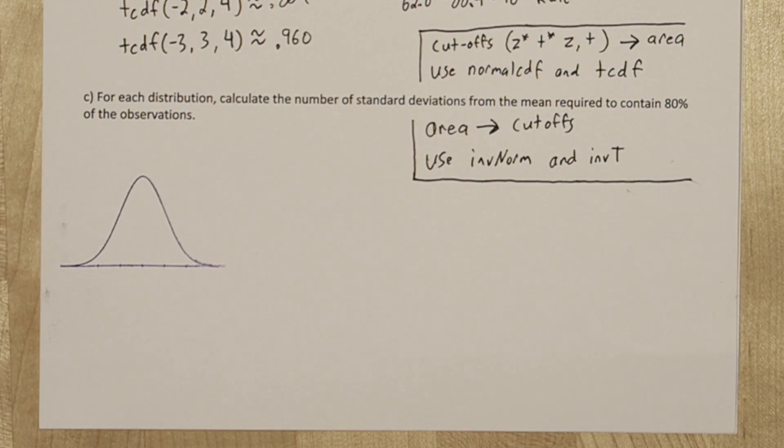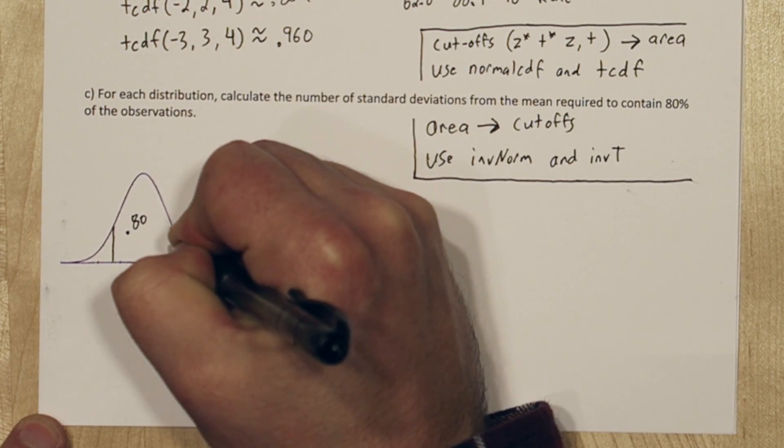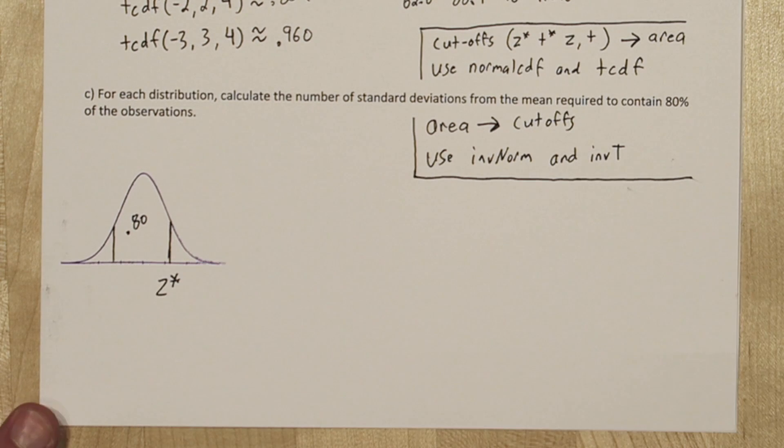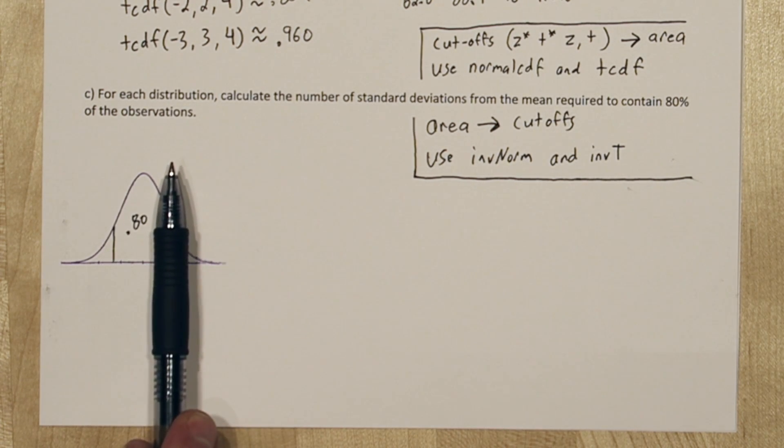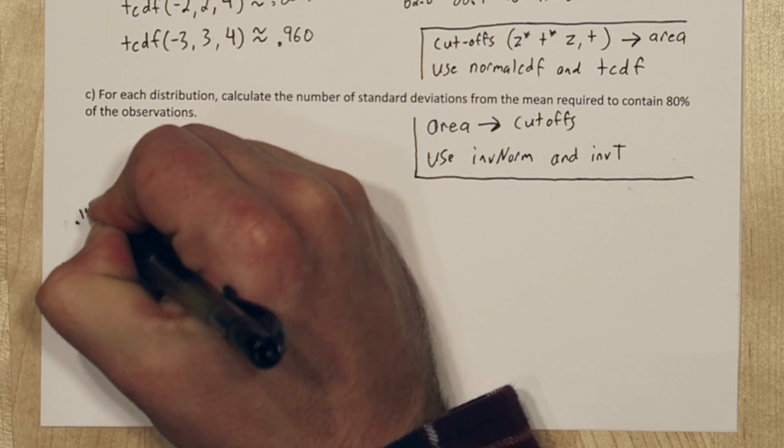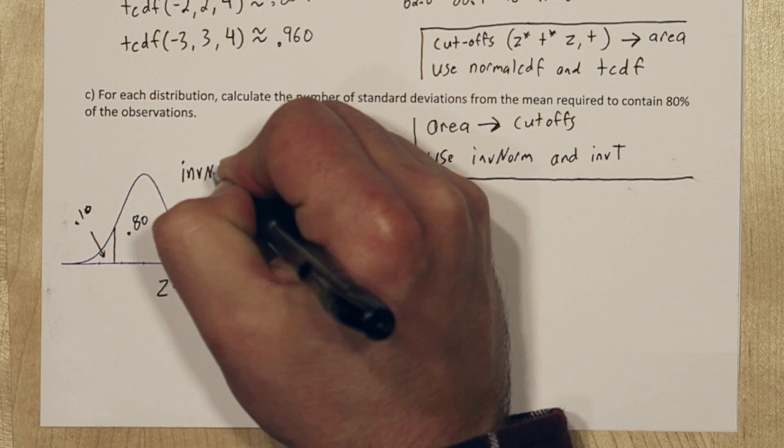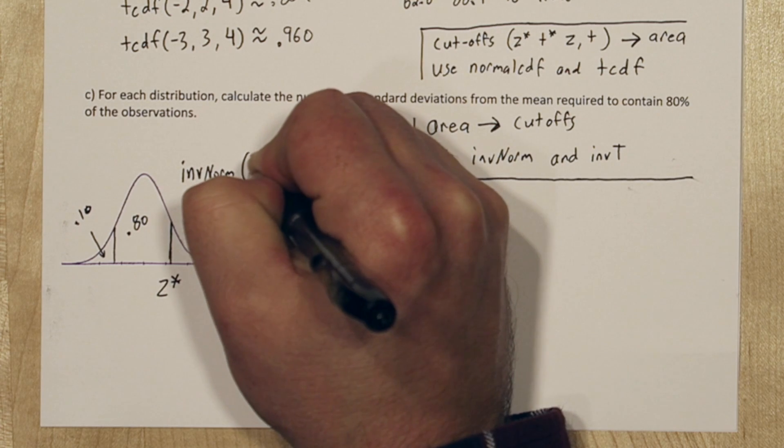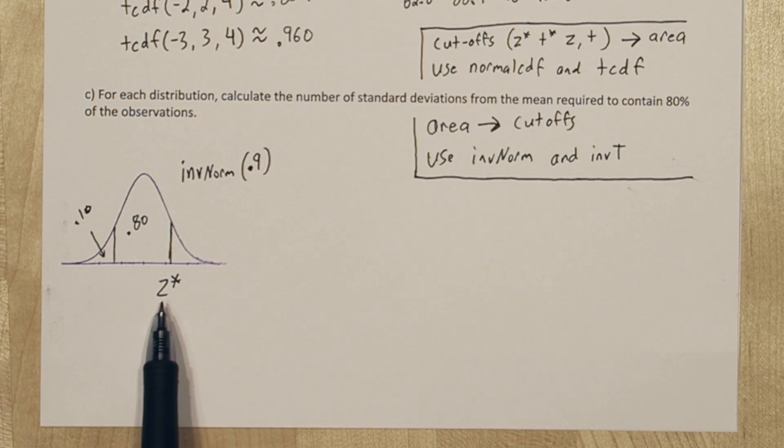Let's start with z. For the standard normal distribution, we can figure out what cuts off the middle 80%. To find this critical value, z star, we have to tell it all the area to the left of it. So that's not only this 80%, but this 10% in the tail down here. So we're going to use the calculator command inverse norm, and we're going to tell it 0.9, which again is all the area to the left of this cutoff value.